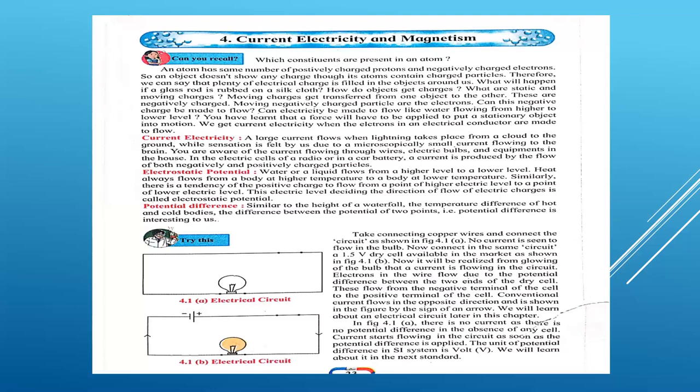Now I will tell you about electric current. In the sky, when clouds strike or during the collision of clouds, what happens? Lightning falls on the ground. In the same way, in the wire when charges flow from one terminal to another terminal, it is called electric current. So electric current means it is the flow of charged particles, or you can say it is the flow of electrons.